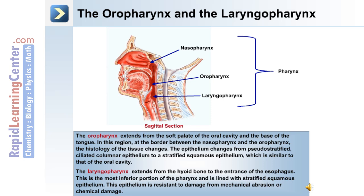The laryngopharynx extends from the hyoid bone to the entrance of the esophagus. This is the most inferior portion of the pharynx and it's lined with stratified squamous epithelium, which is resistant to damage from mechanical abrasion or chemical damage.